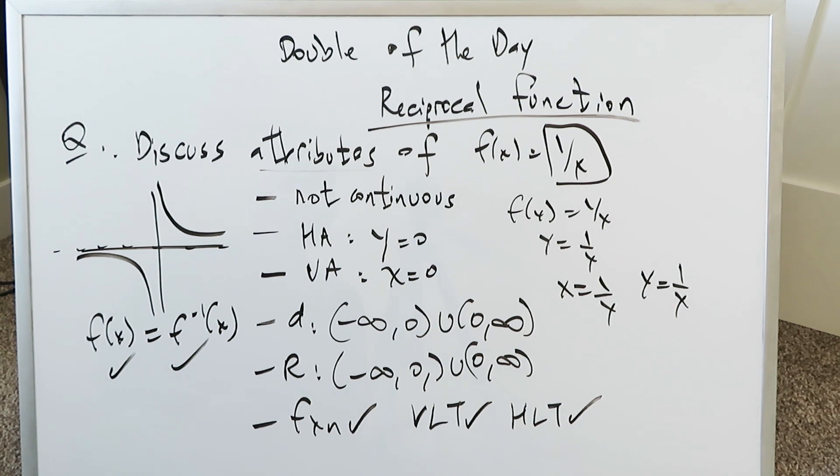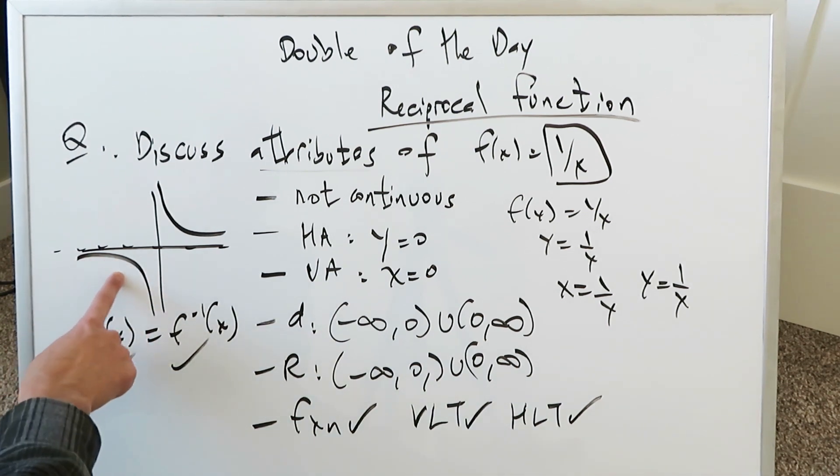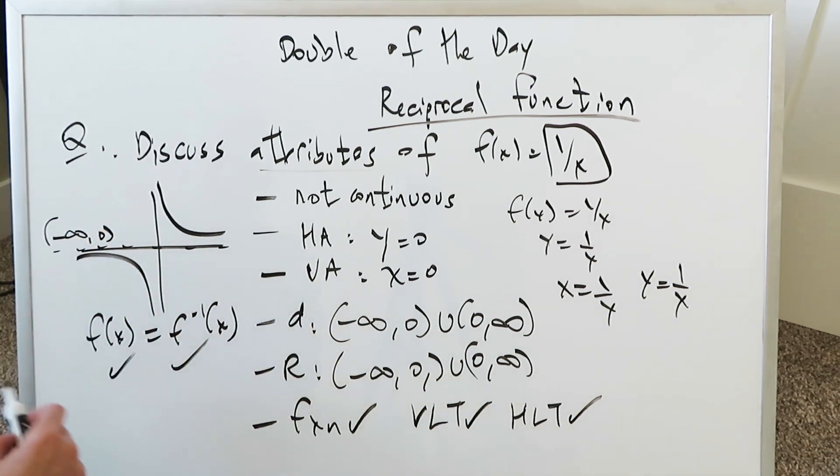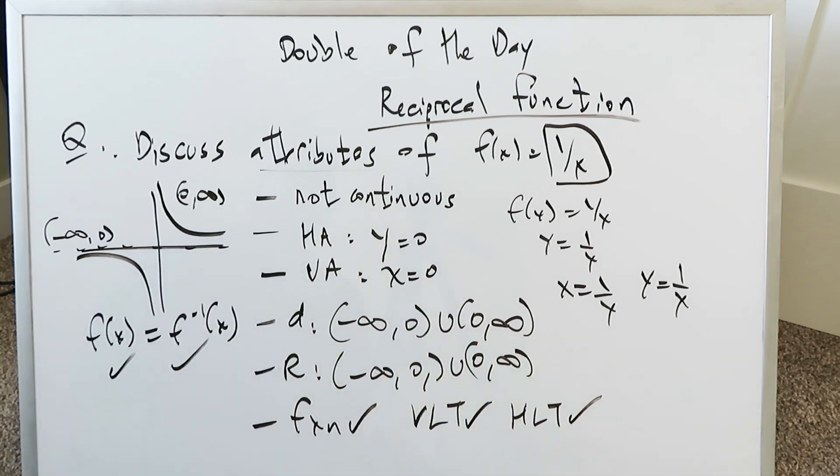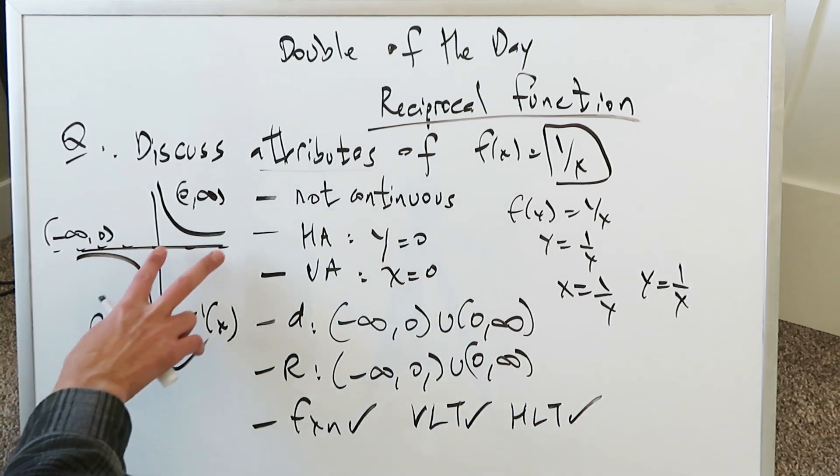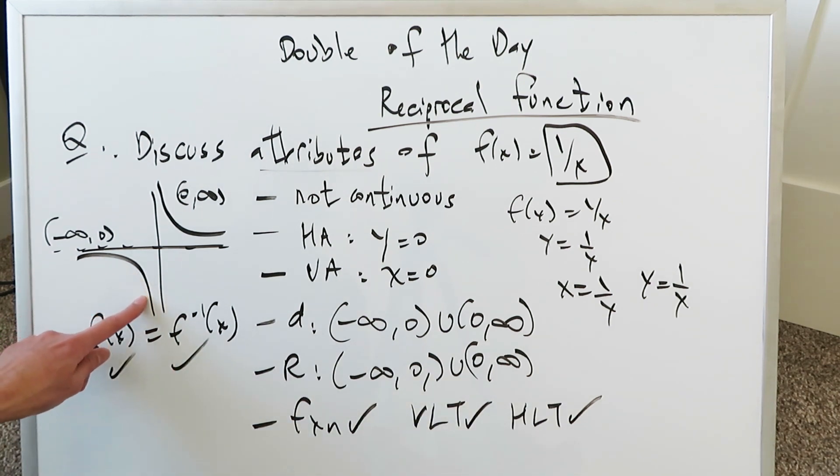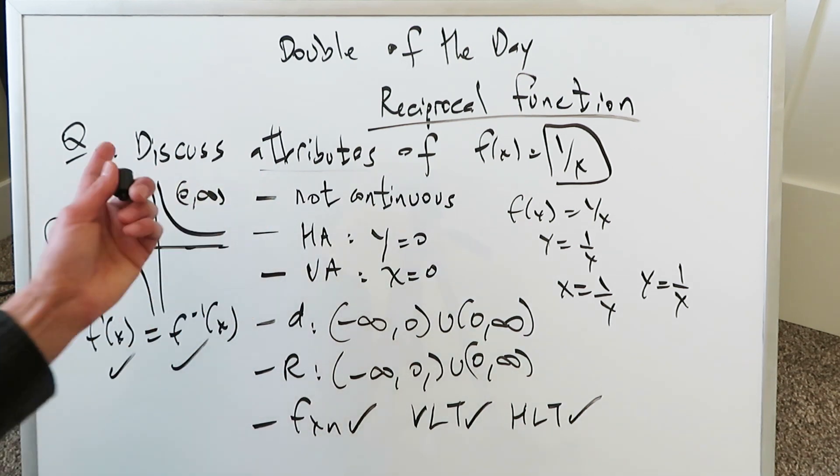That right there will bring us to the end of this first question. But if you want to talk about other attributes, you can say it is a decreasing function. From minus infinity to 0, your function decreases. It's going from left to right, it goes downwards. But then also from 0 to infinity, again, it's decreasing. So this is always in some way a decreasing function because the y values are always getting smaller as you go from left to right.